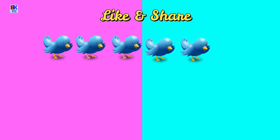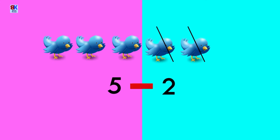We have five birds. Out of that, two birds fly away. How many birds are left now? One, two, and three. In other words, if we subtract or take away two from five, we get the answer one, two, and three.